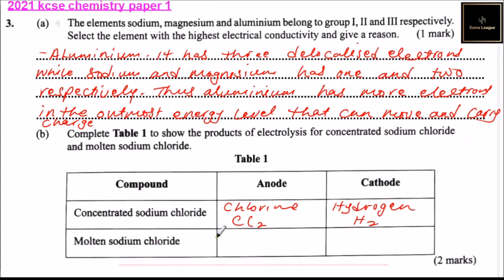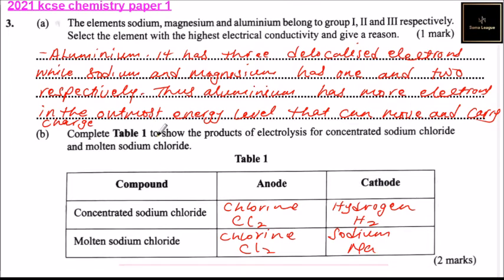For molten sodium chloride, chlorine is produced at the anode, which is Cl₂. And at the cathode, sodium is produced, with formula Na. Those are the products produced at the anode and the cathode. By doing that, you should be able to get three marks.